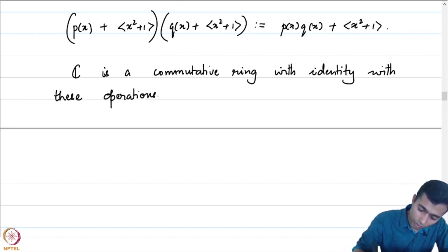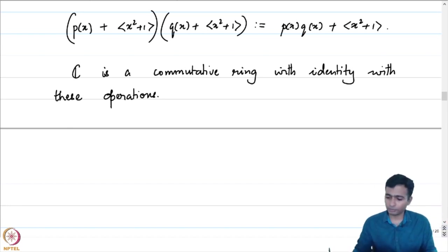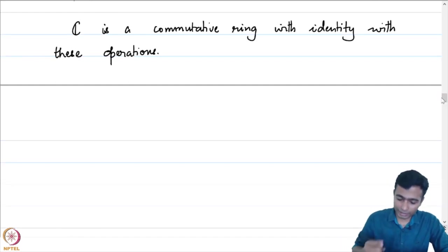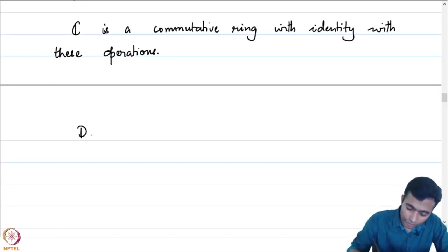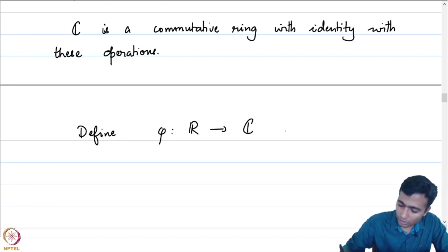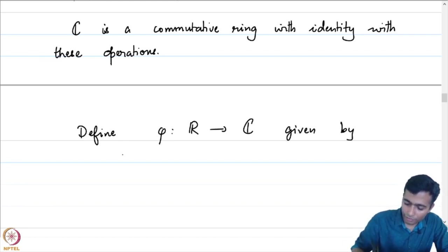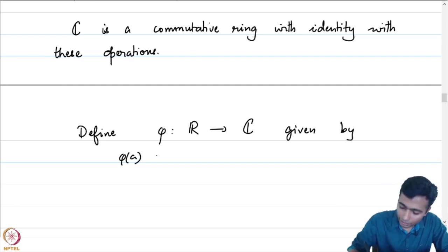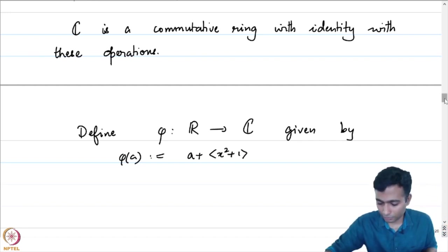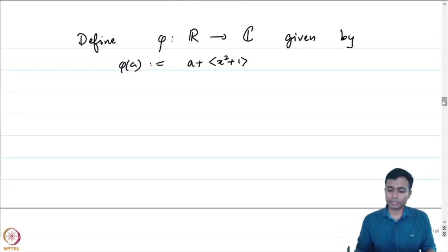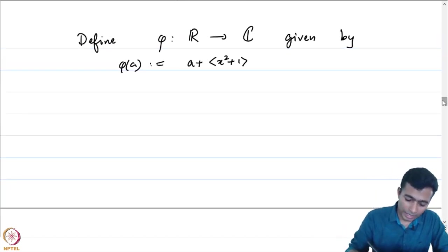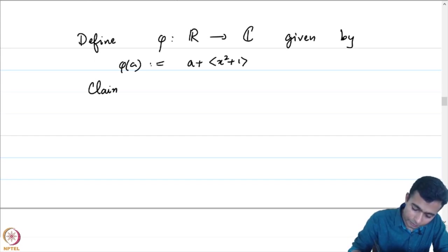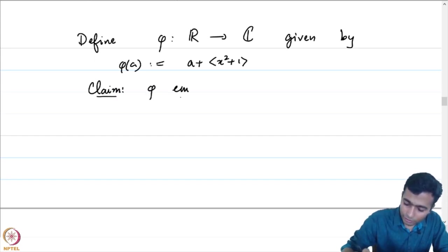We have found a commutative ring which is a candidate. Define the map phi from R to C by phi(a) equals the coset a + ⟨x²+1⟩ for any real number a. It is easy to check that this is a ring homomorphism. Also notice that phi is injective — phi embeds R into C.